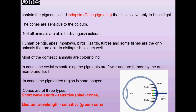Not all animals are able to distinguish colors. Human beings, apes, monkeys, birds, lizards, turtles, and some fishes are the only animals that can distinguish colors well; most domestic animals are color blind. Cones are of three types — those sensitive to blue, green, and red color respectively — which are porphyropsin, iodopsin, and cyanopsin.